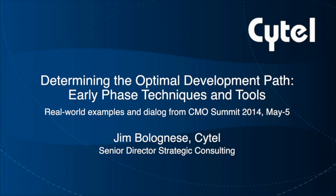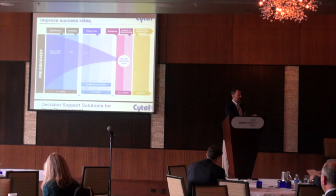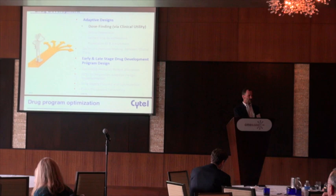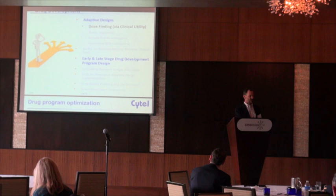This is about testing your development plan before you carry it out and using that testing to optimize your development plan. We're interested in this because of the high attrition rate of drugs through the development process. I'm going to talk about dose finding via clinical utility, which is a combination of safety and efficacy.